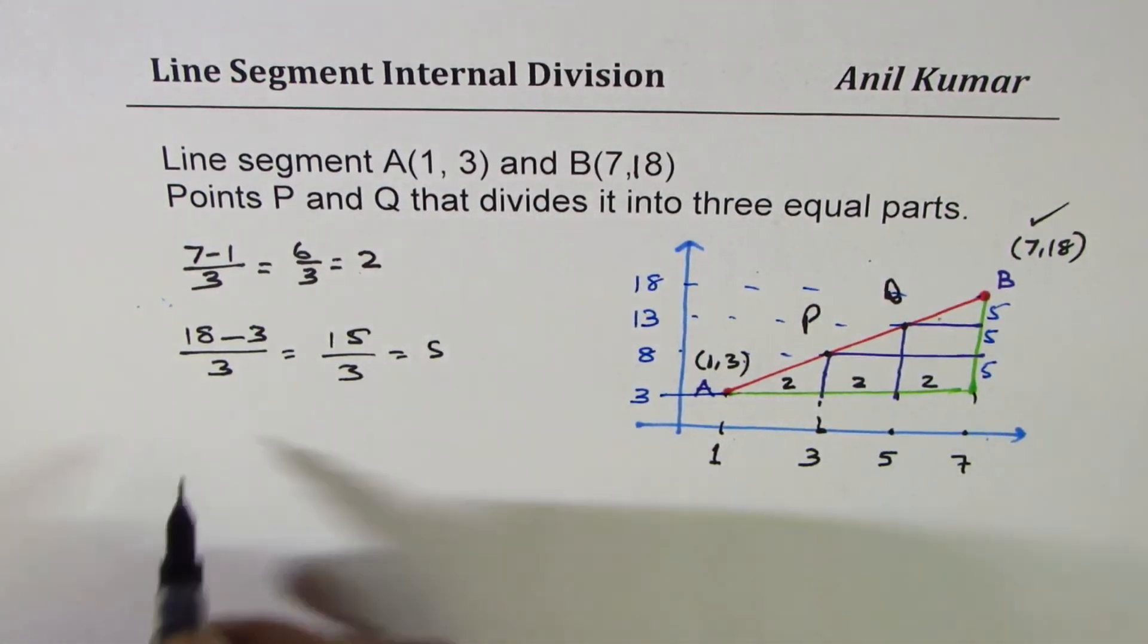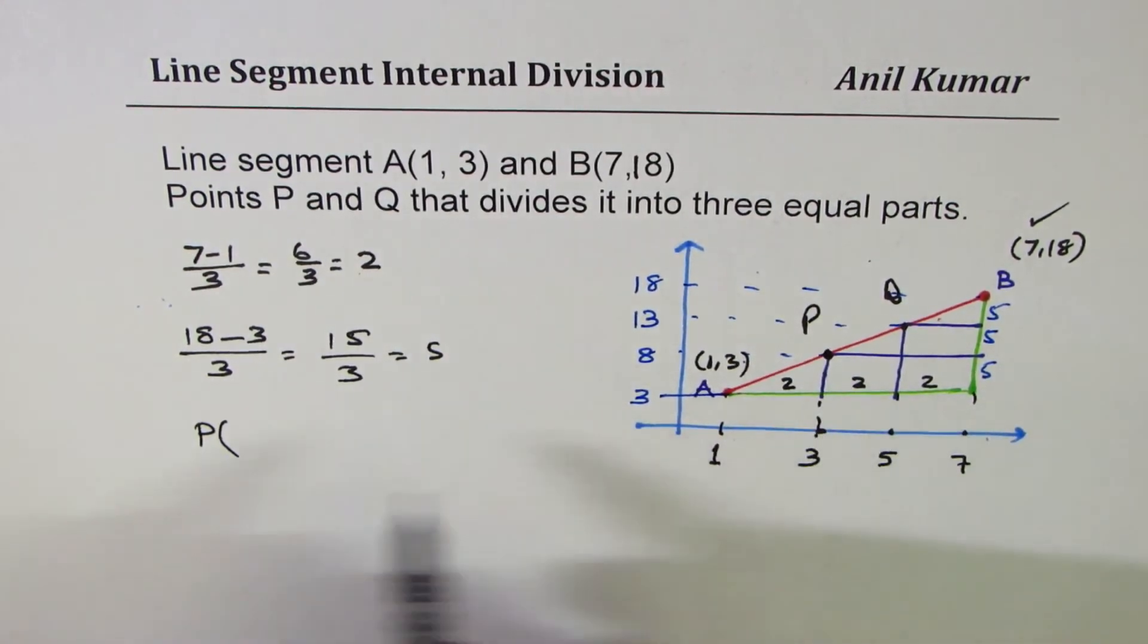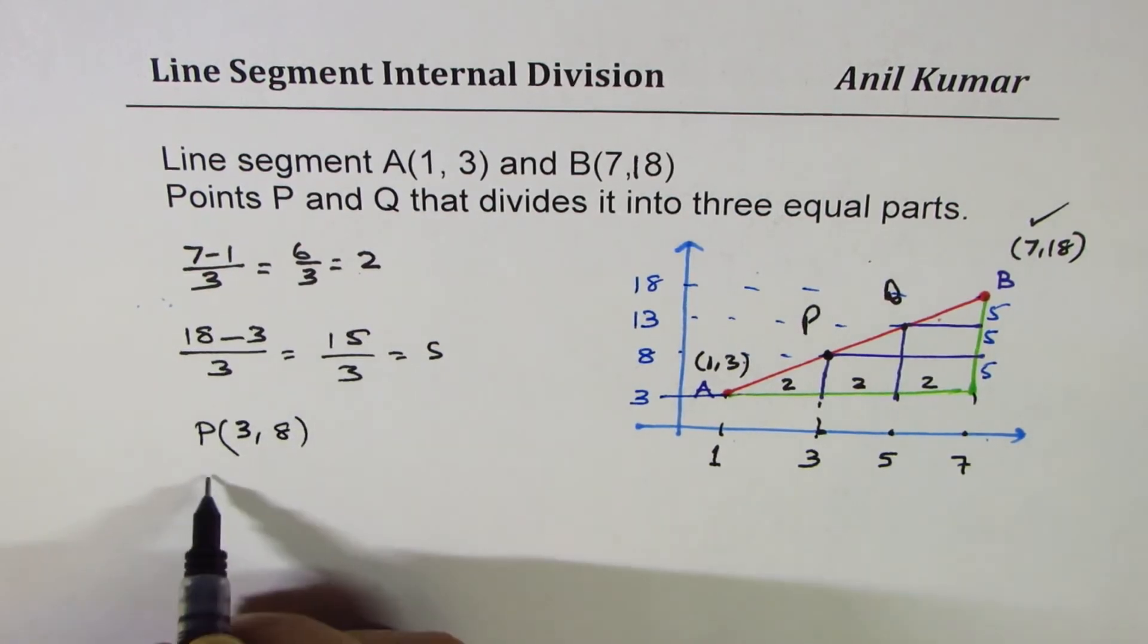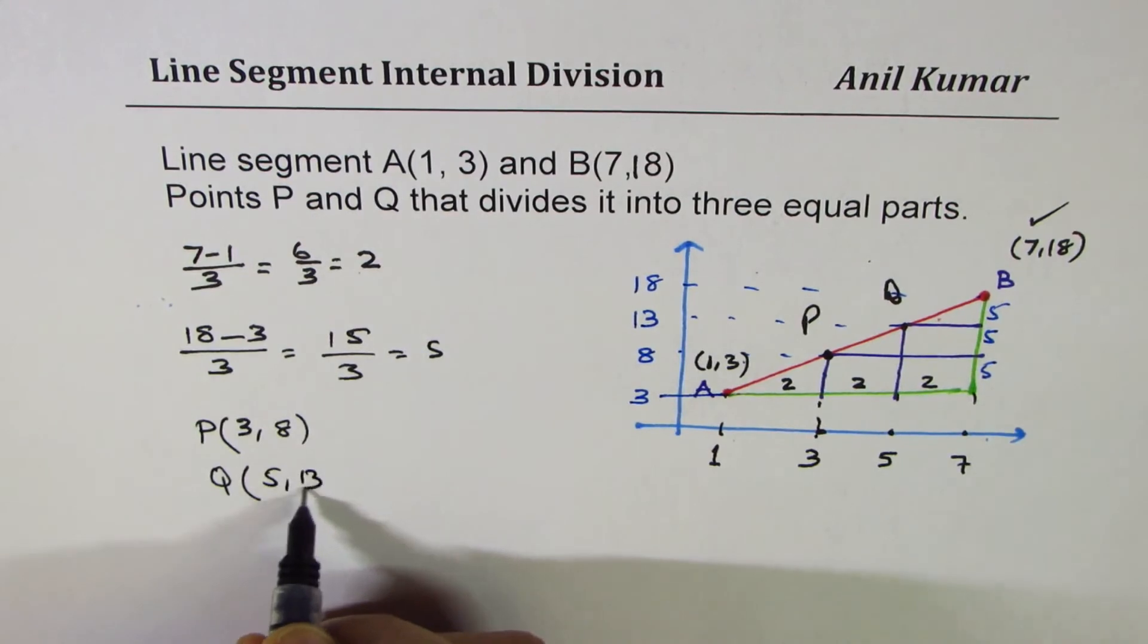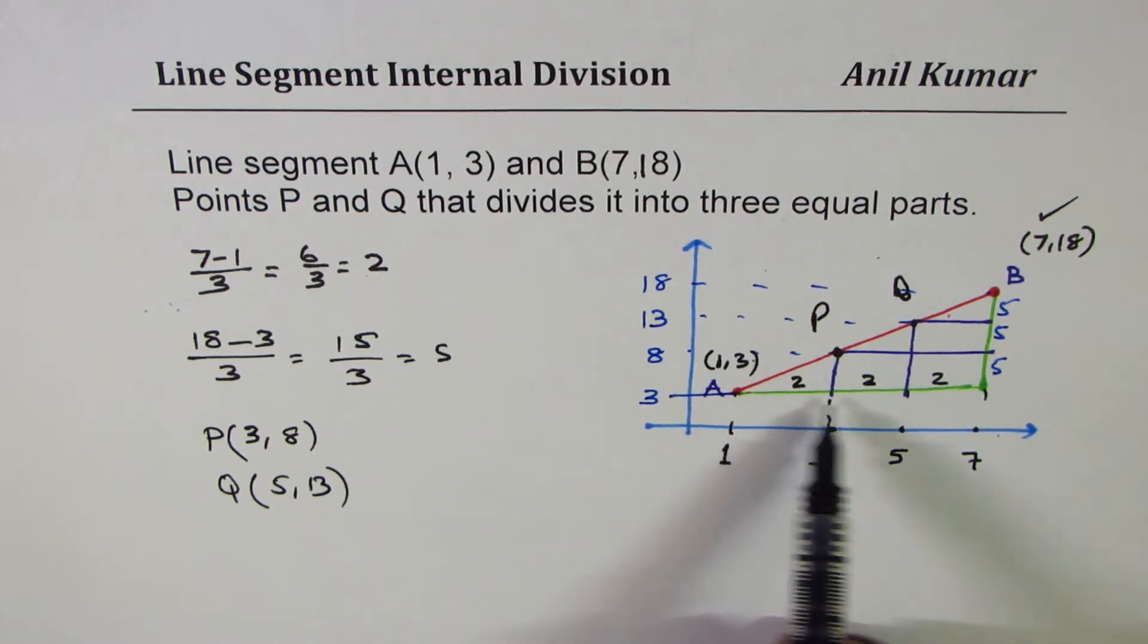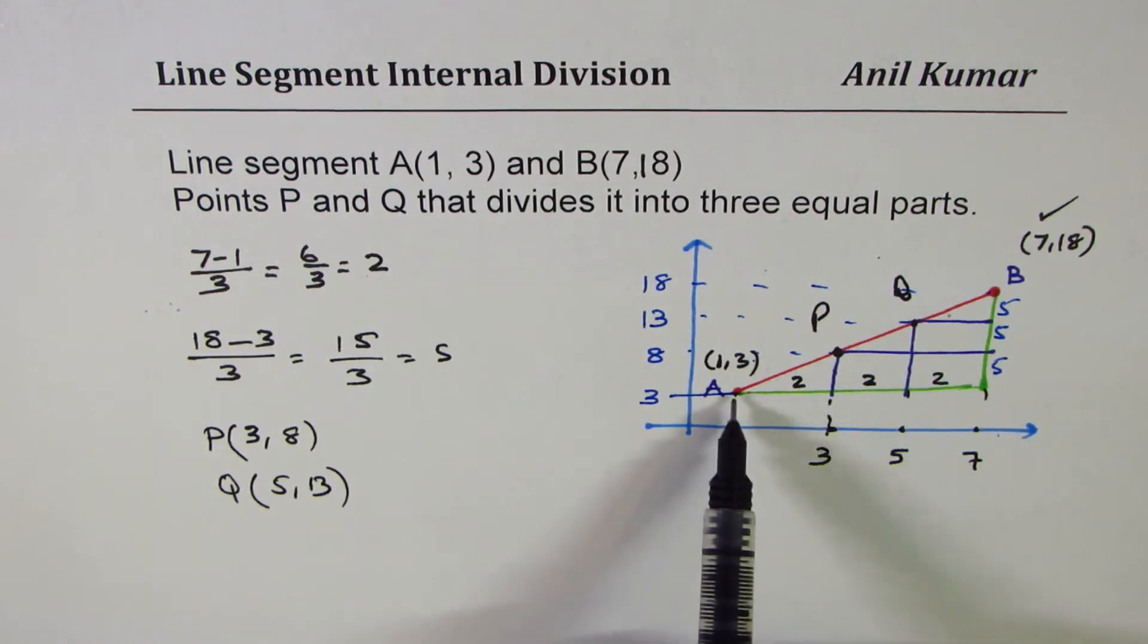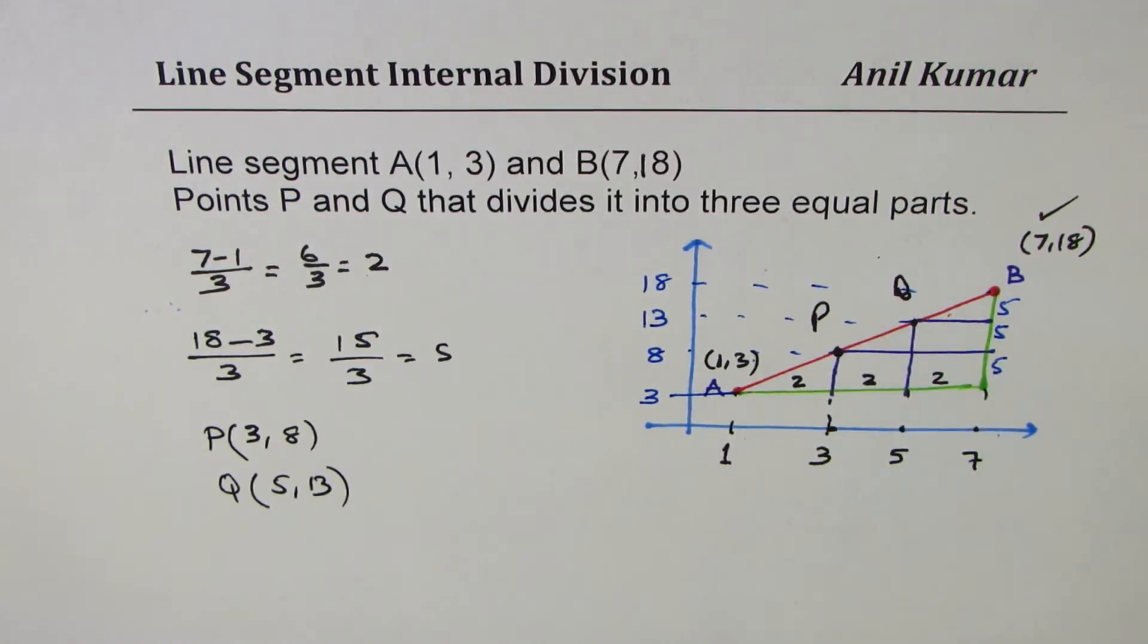You get your answer. We get point P as this coordinate, 3, 8 and Q as that coordinate, 5, 13. I hope with this you understand the concept. The idea is if you are dividing into three equal parts, we could see those parts being divided along x-axis and along y-axis. We can add each portion to the initial value A to get our answer. That's how we are going to do it.